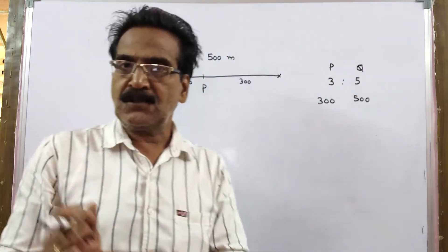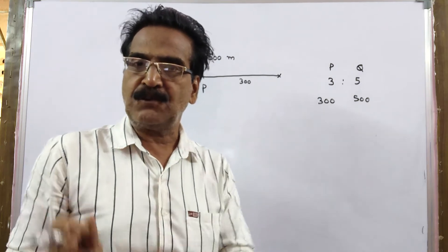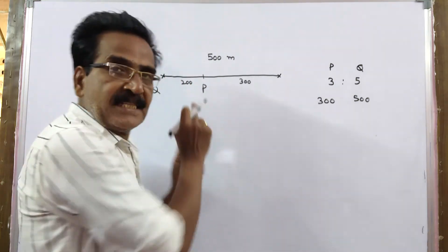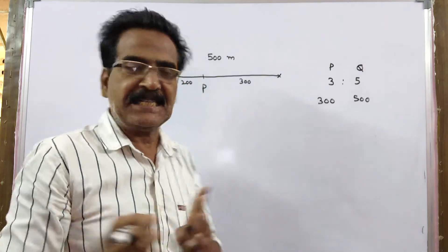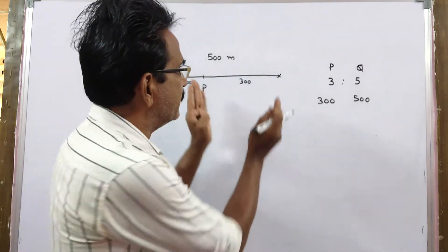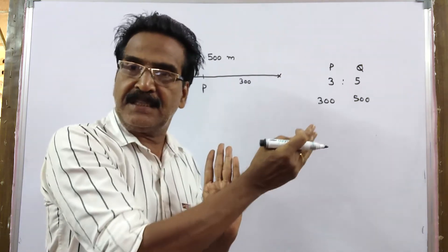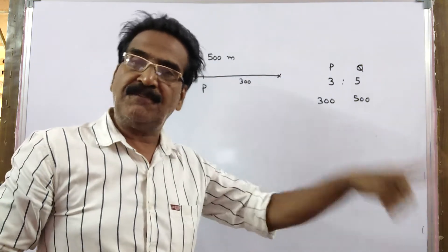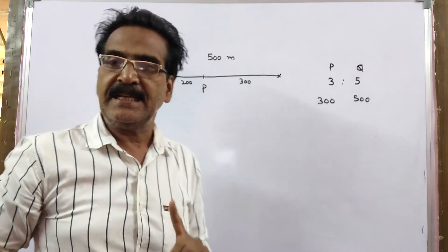It is also given that P has a start of 200 meters. P has a start of 200 meters means P needs to run only 300 meters to win the race, whereas Q has to run 500 meters to win the race.